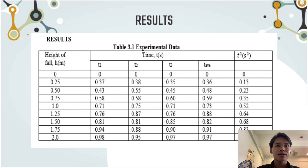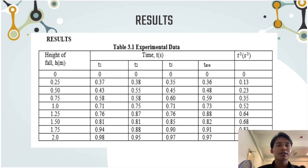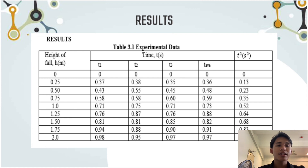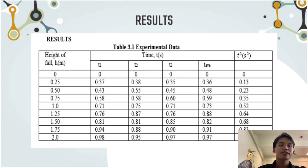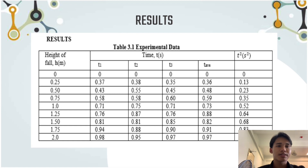We then find the average time taken for the experiment by adding all the time data taken and dividing by three. Lastly, the average time is squared to obtain the t-squared data for analysis.